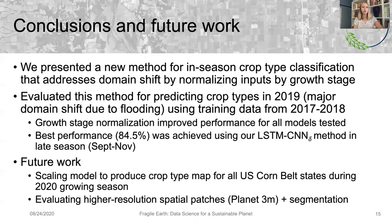In future work, we are working on scaling our model to produce crop type maps for all U.S. Corn Belt states during the current ongoing 2020 growing season. We are also working on evaluating higher resolution spatial patches, such as the three meter Planet Labs data for the CNN branch of the model. Additionally, we are testing segmentation methods such as UNET to see if these provide improved classification performance.